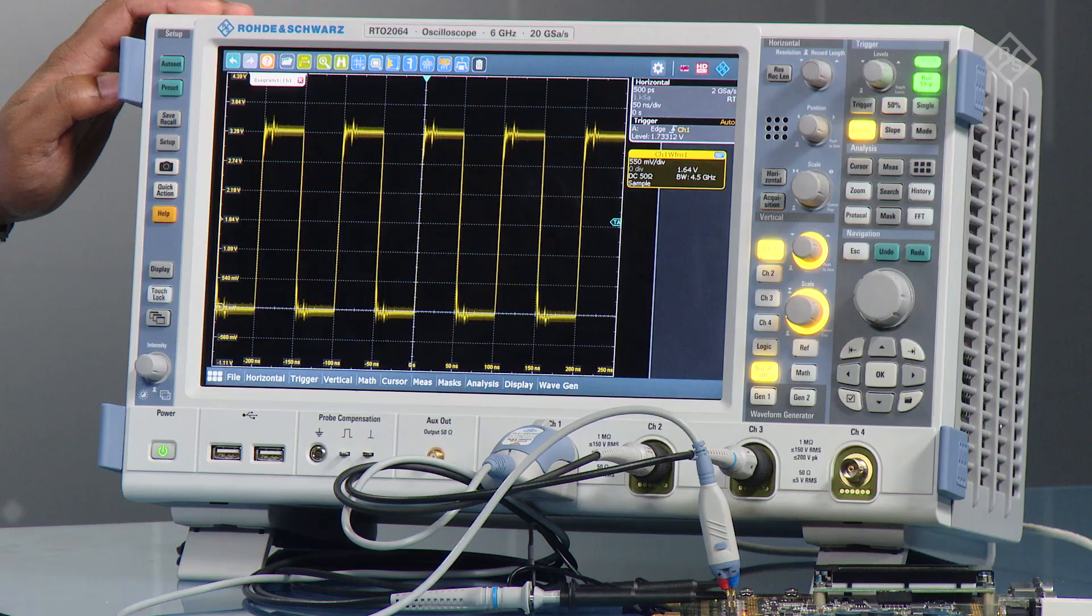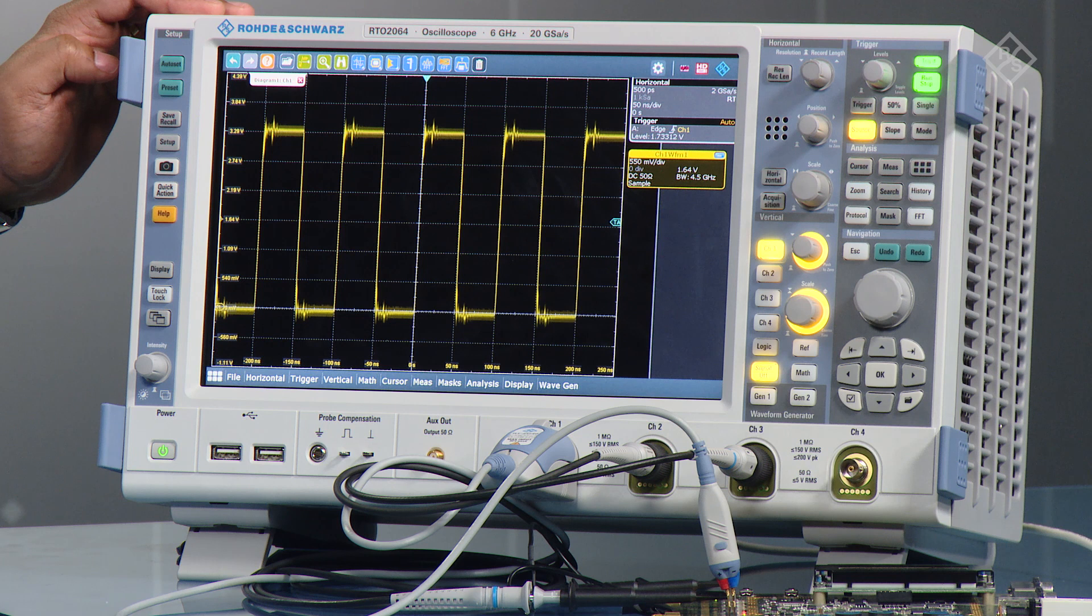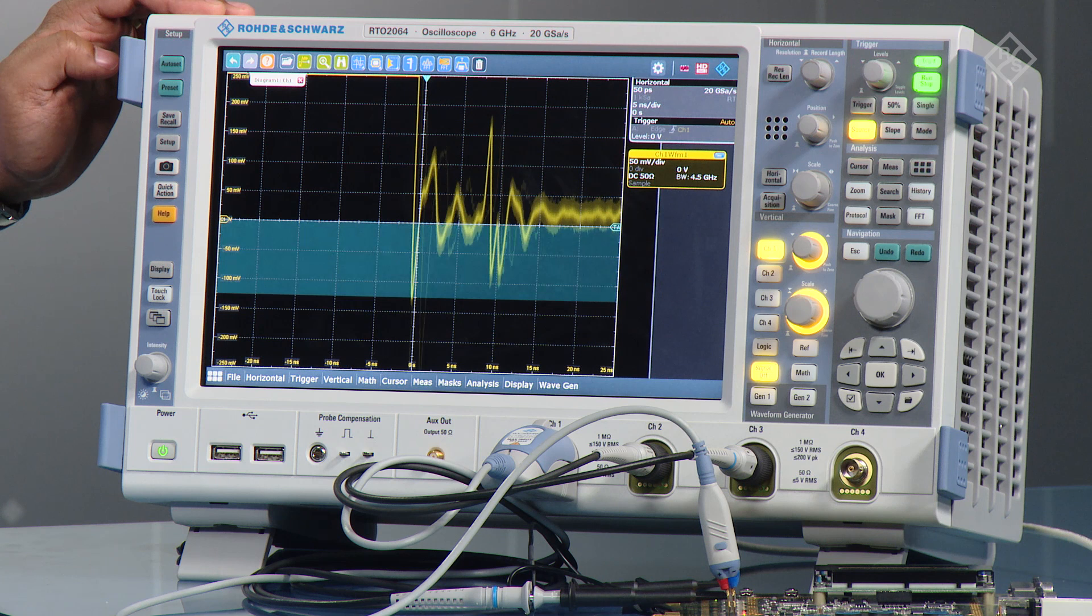As you can see I've got the RTO here, and on the left-hand side you see all the main housekeeping keys. Two of the main important keys there would be the preset key, so you can go back to a factory default state, and the magic auto-set button if you wish to use that.